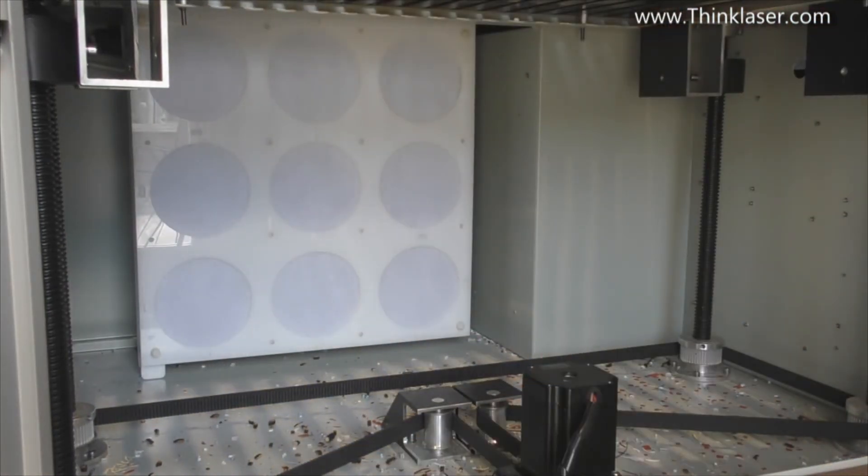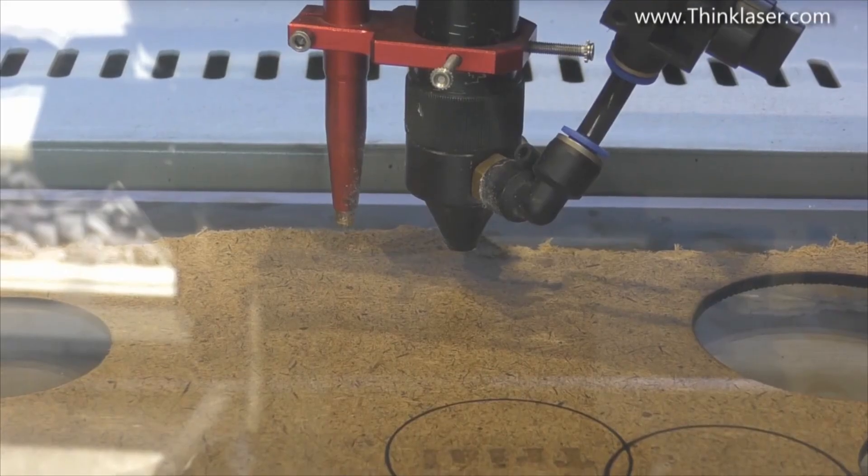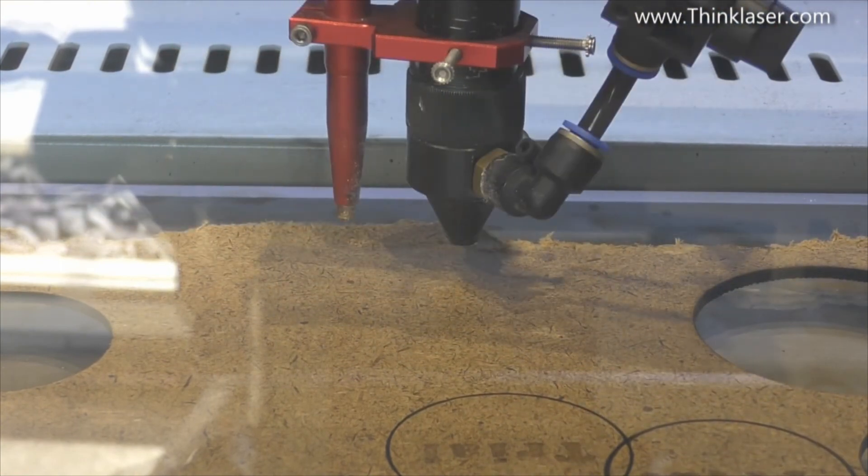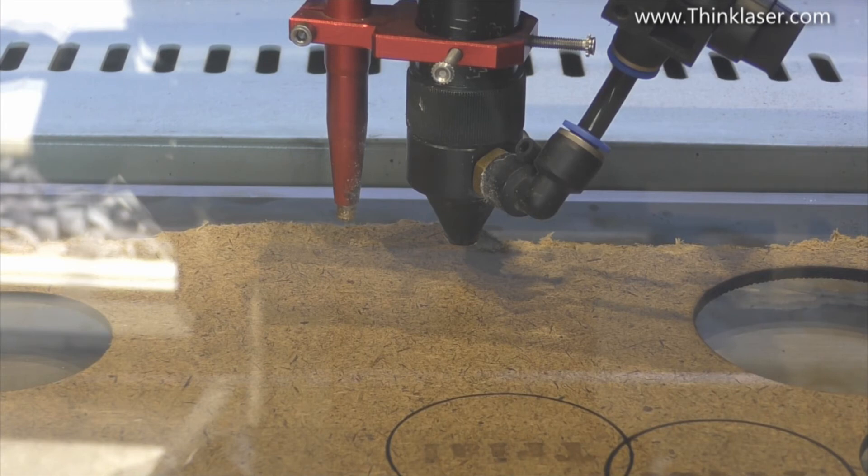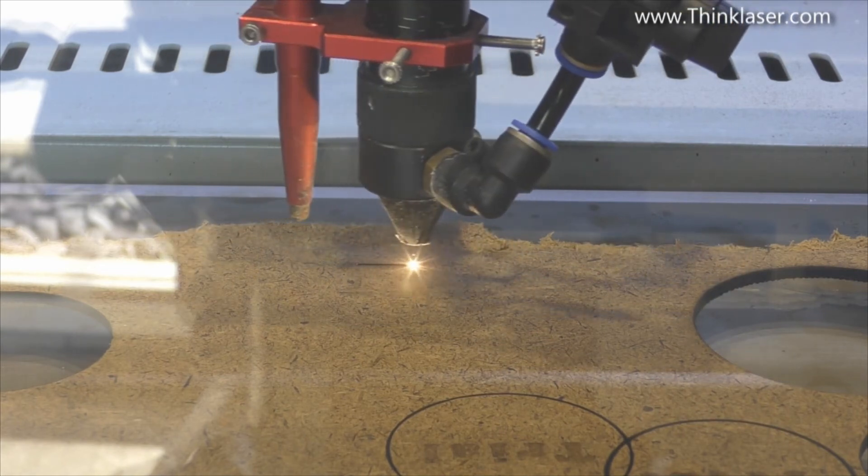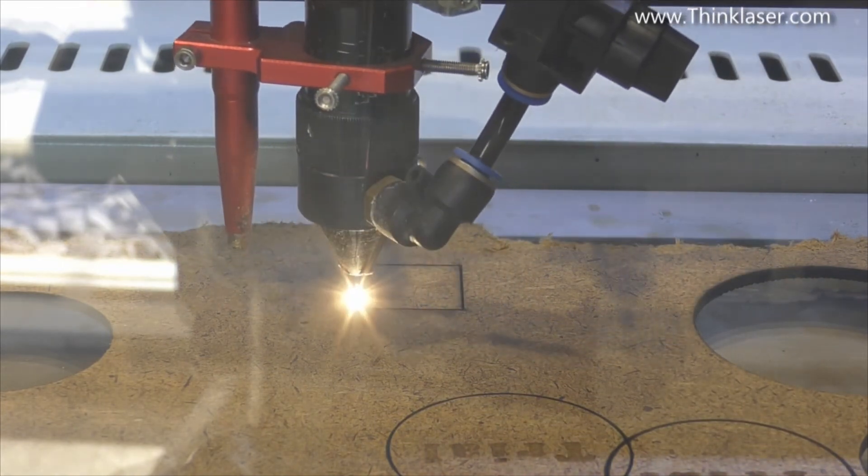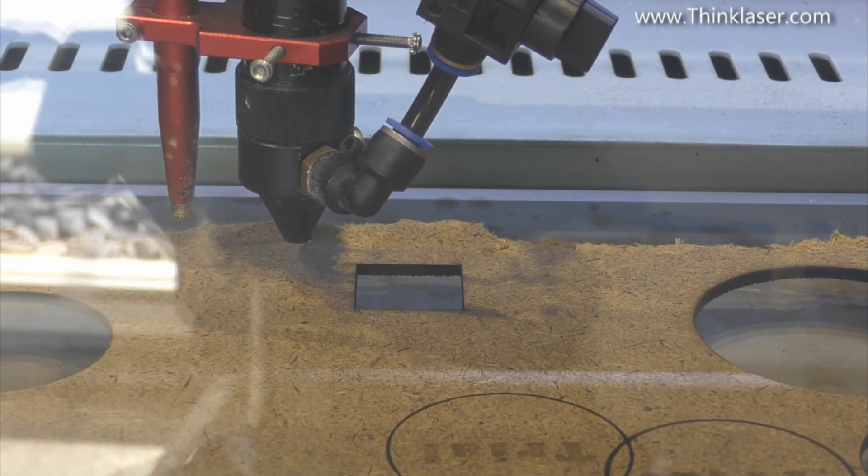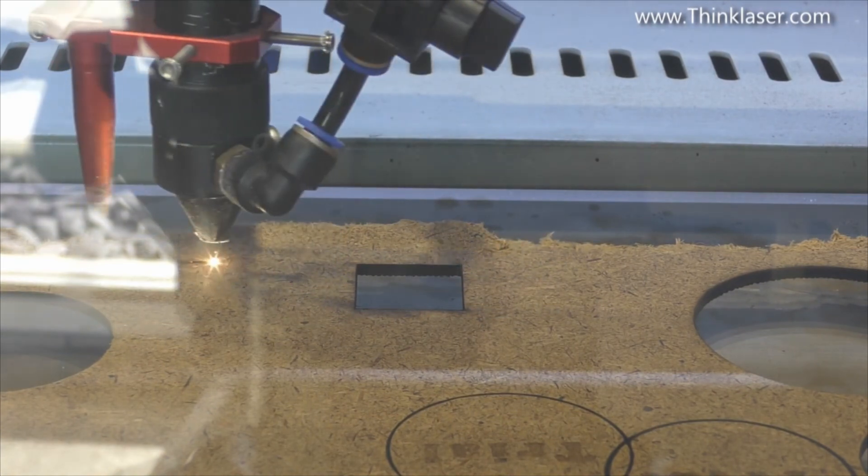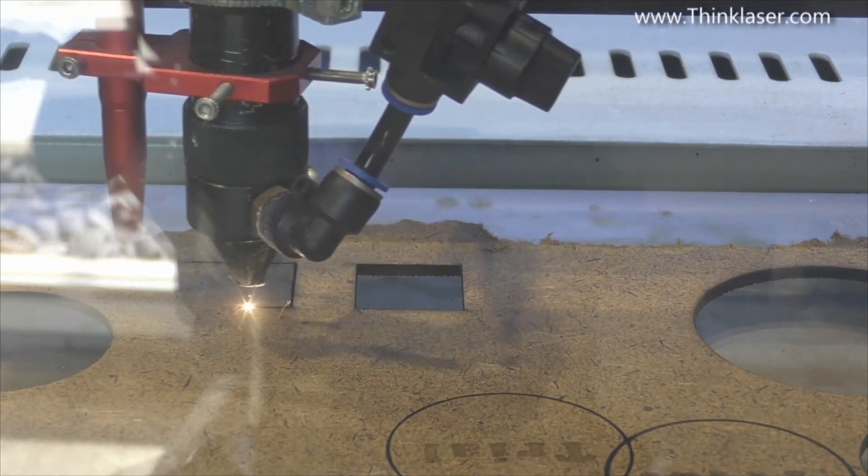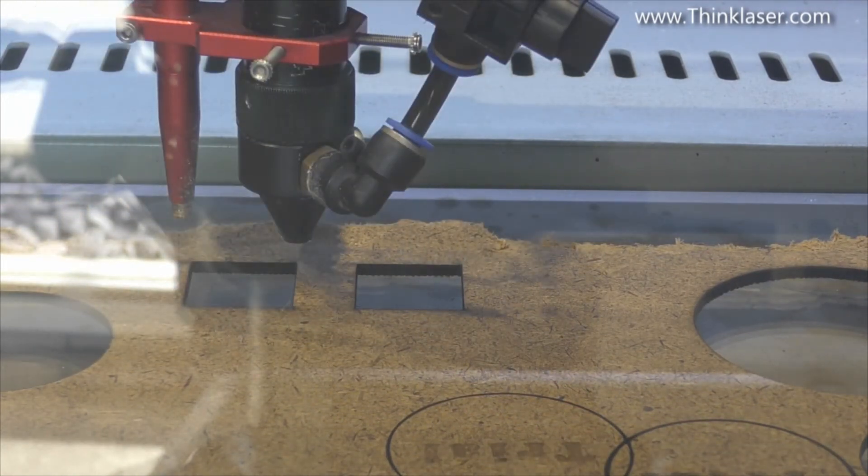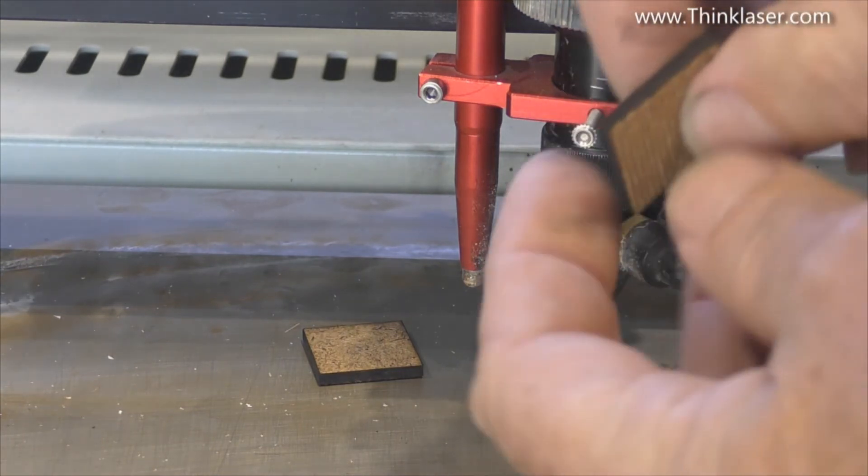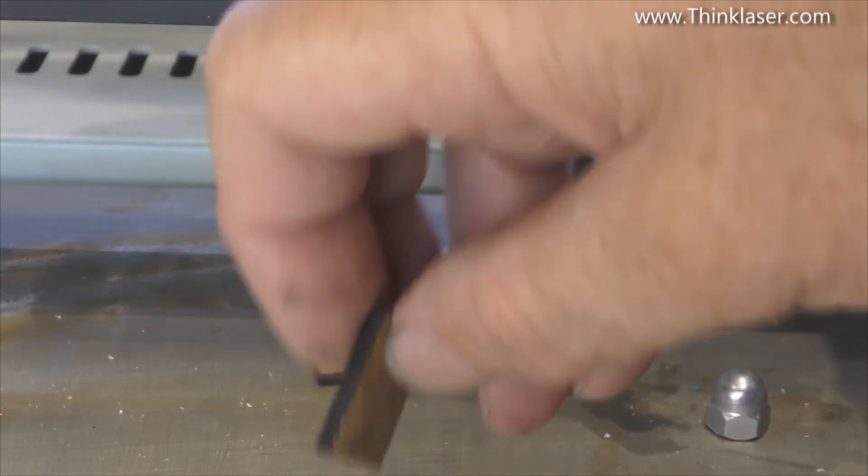We'll just turn the extract system on to make sure that the filter doesn't go and suck in. Now I'm just going to do a 25mm test square on some hardboard, which is sort of MDF type material. We can see the fumes being drawn backwards.